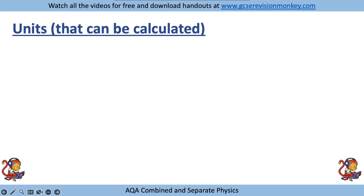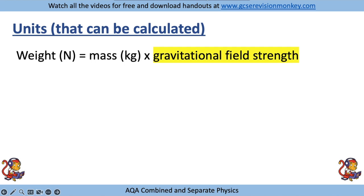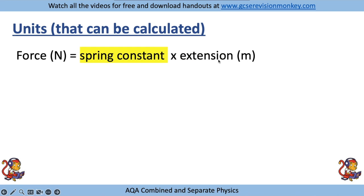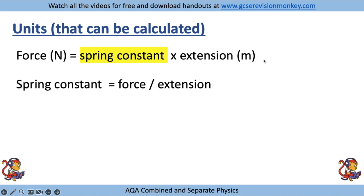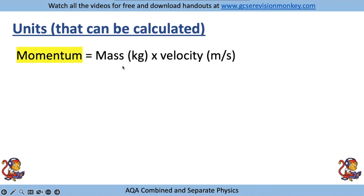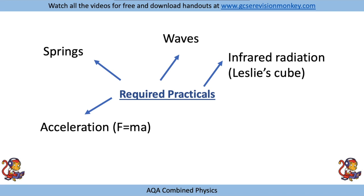Some units can be worked out from equations. Gravitational field strength: rearrange W = mg to get g = W/m, so units are newtons per kilogram. Spring constant: rearrange F = ke to get k = F/e, so units are newtons per metre. Momentum equals mass in kilograms times velocity in metres per second, giving units of kilogram metres per second.